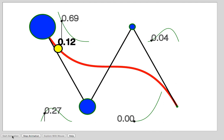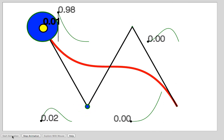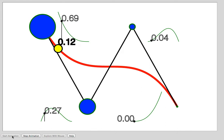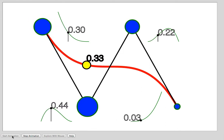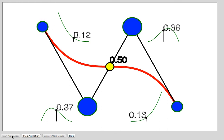But most importantly, notice the following. The yellow point is always at the center of gravity of the four blue circles, which are the control points.